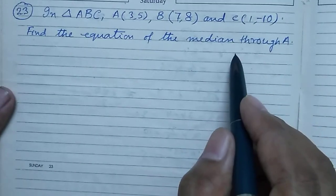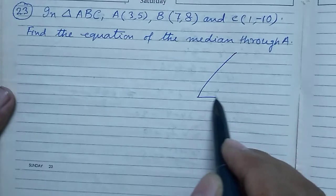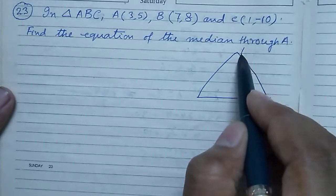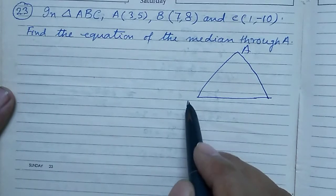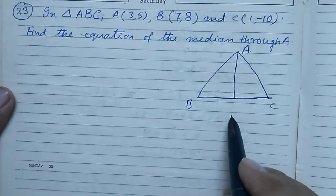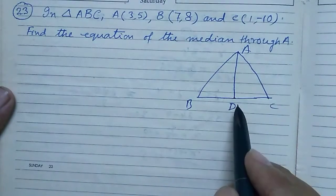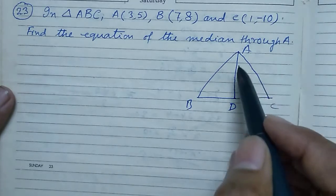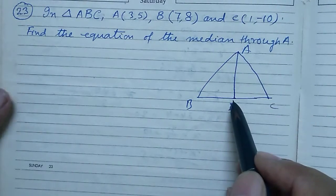What is the definition of median? The median is the line segment through a vertex and the midpoint of the opposite side. Say D is the midpoint of BC. Then we have to find the equation of AD.